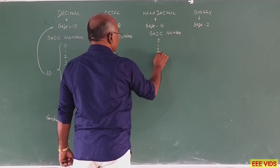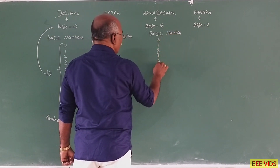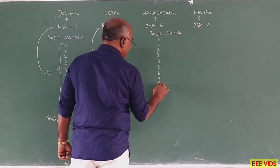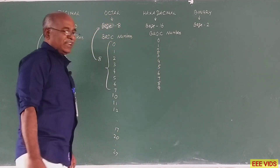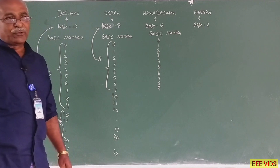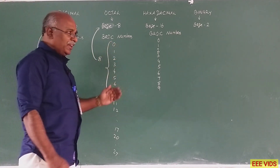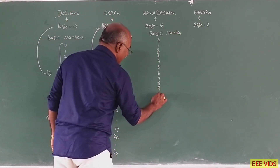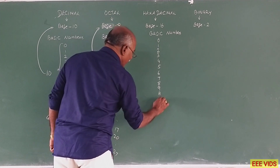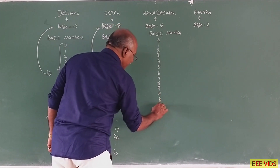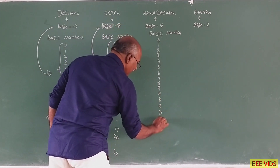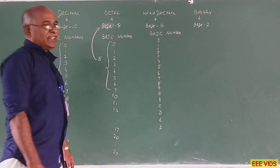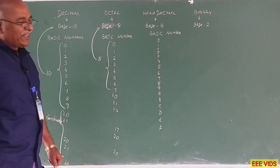For hexadecimal, the digits go 1, 2, 3, 4, 5, 6, 7, 8, 9. Decimal goes up to 9, and then from 10 onward we use alpha-numeric characters: 10 is represented as A, then B, C, D, E, F. So these are the hexadecimal basic numbers.